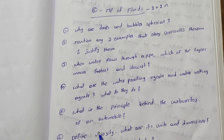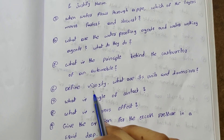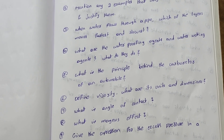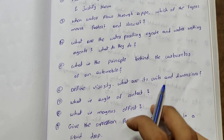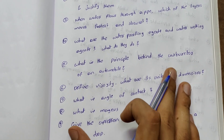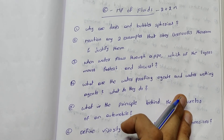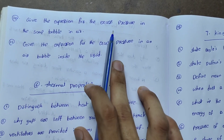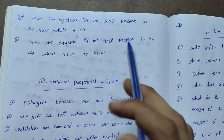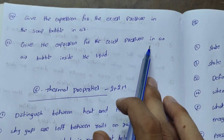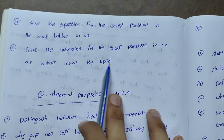What is the principle behind the carburetor of an automobile? What is the angle of contact? This is very important. What is the Magnus effect? Give the expressions for the excess pressure in a liquid drop, air bubble inside liquid, and soap bubble.